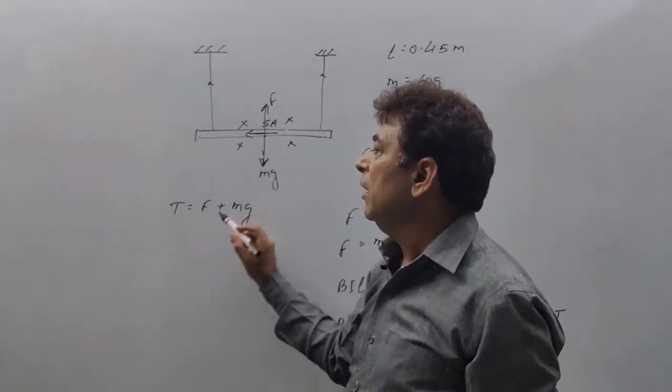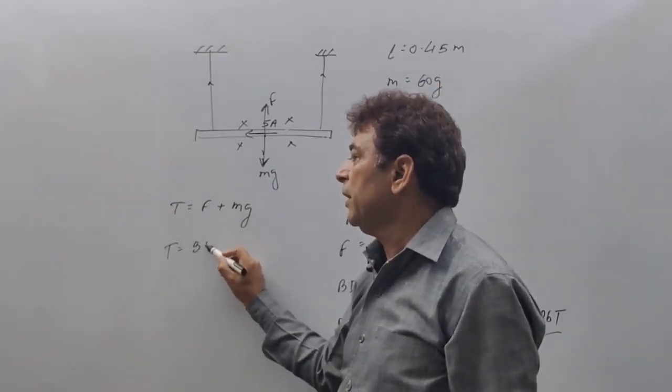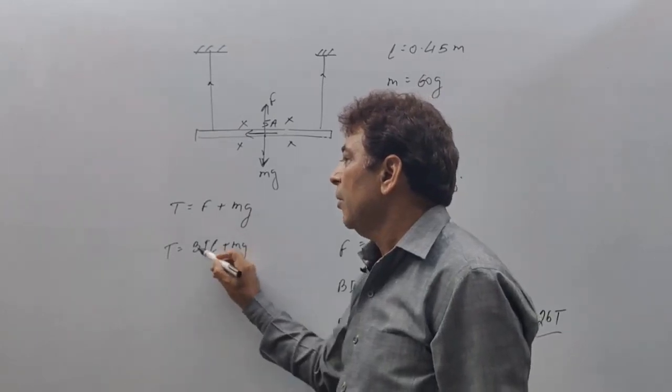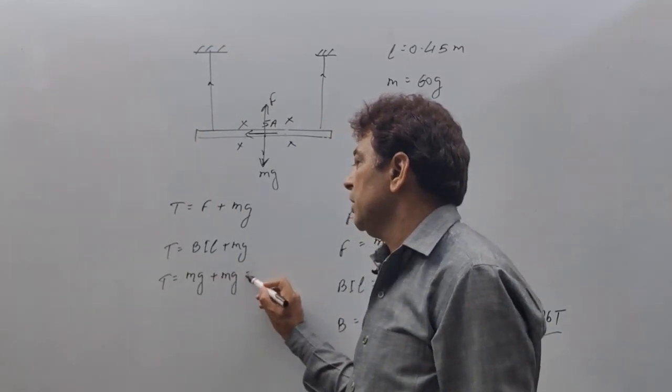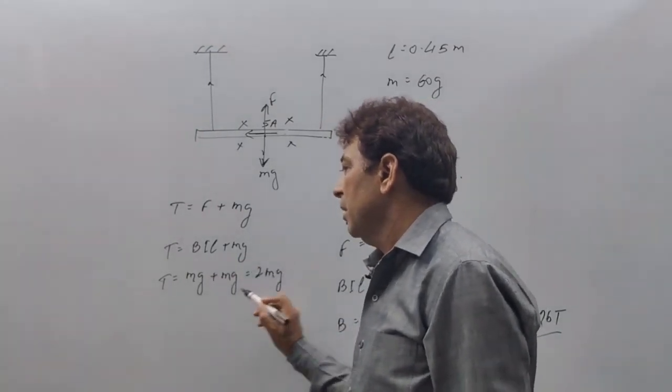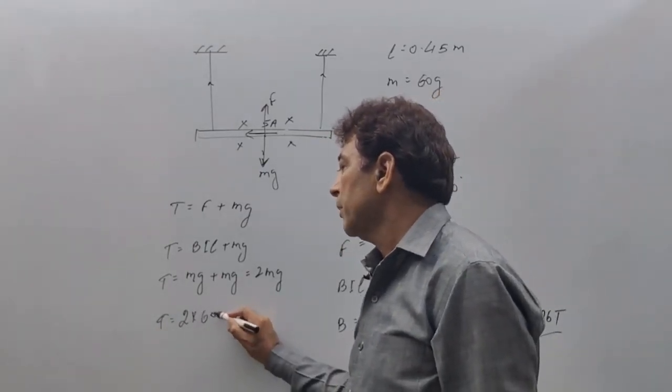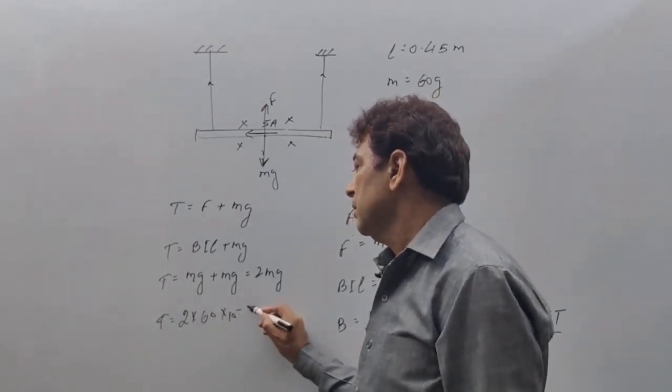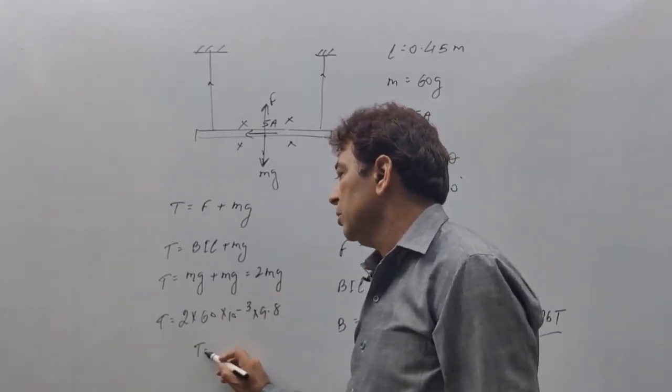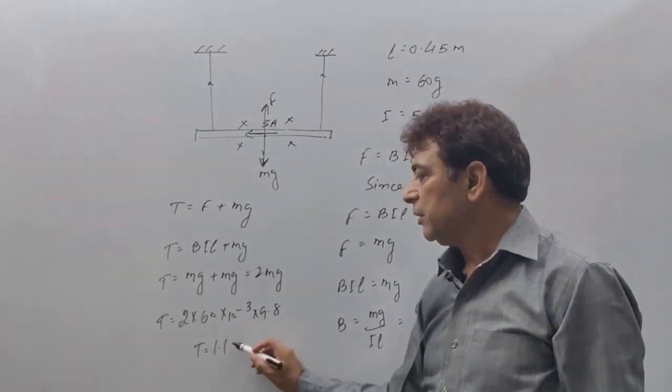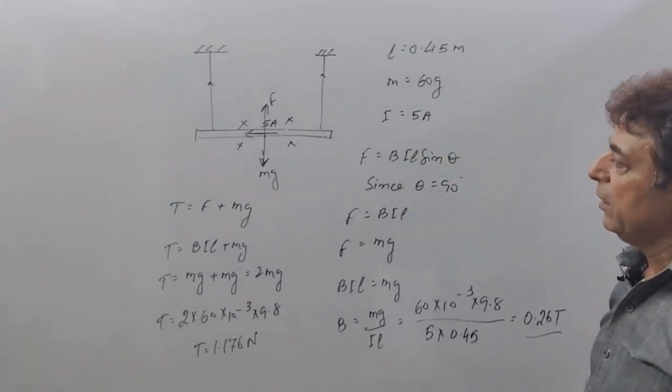So this force will also be going downward. Total tension will be force plus mg, and force is BIL which is equal to mg. So this becomes 2mg. T will be equal to 2 into mass 60 gram, and g is 9.8. The value of T comes out to be 1.14 newton. That's the total tension in the wires.